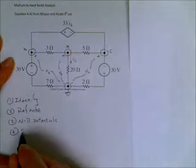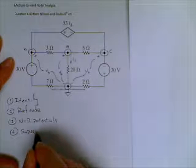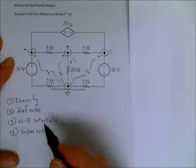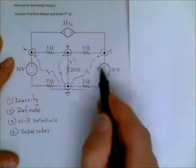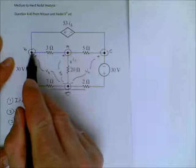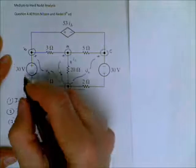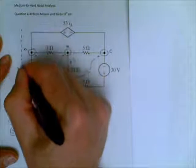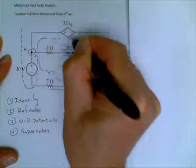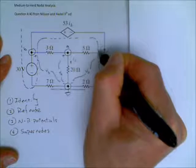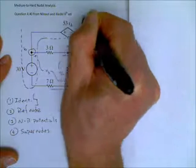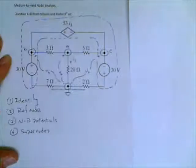Number four, we're looking for super nodes. In this particular case, we see that there are one, two, three voltage sources, and those voltage sources define the voltage between various nodes. And so, in fact, we have a super node that extends from there all the way to there. There's our super node.